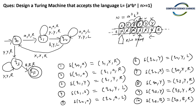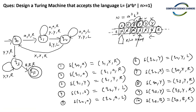So this is one Turing machine for the context-free language aⁿbⁿ. aⁿbⁿ is a context-free language. In the next lecture, we will take an example of a non-context-free language and see how we can design a Turing machine for it. We'll stop this lecture here. If you have any queries, you can put them in the comment section. Thank you.